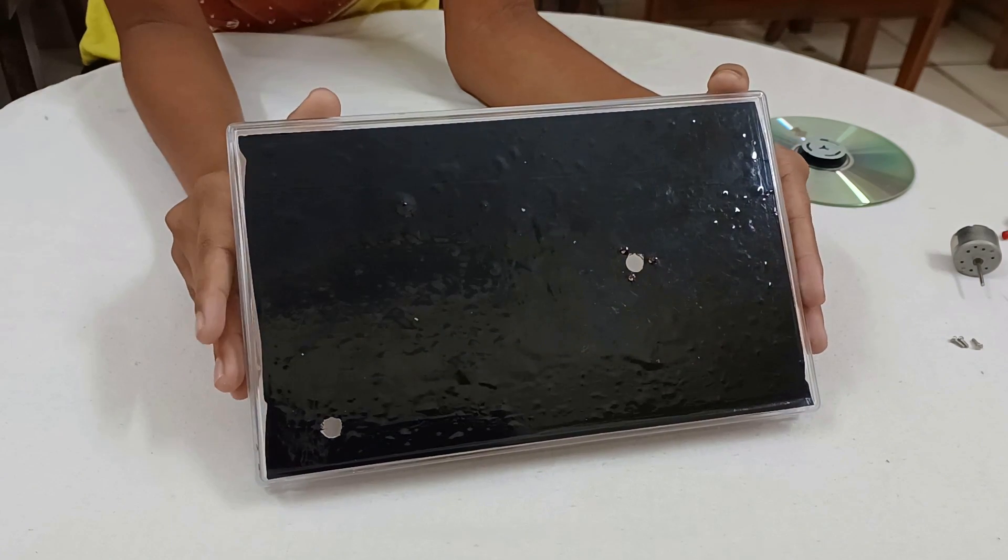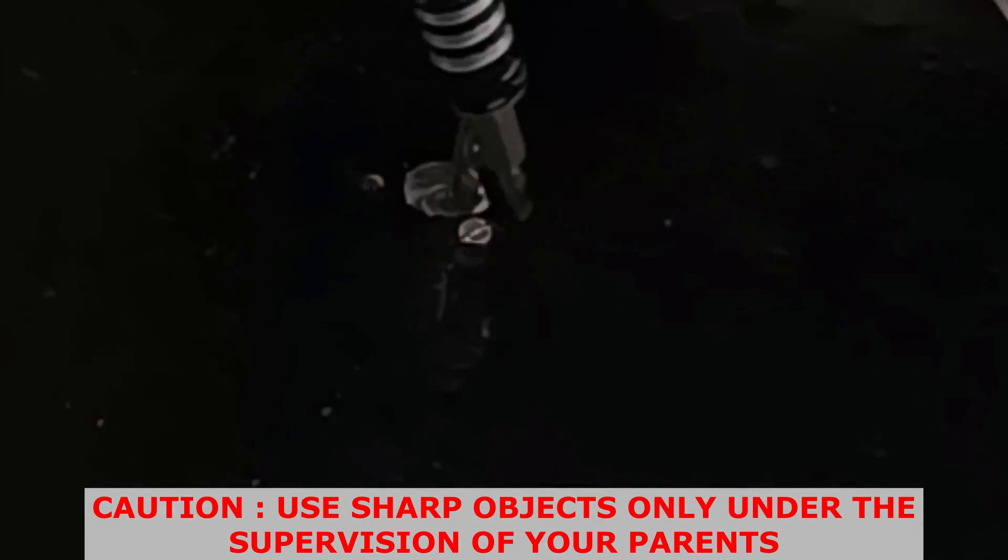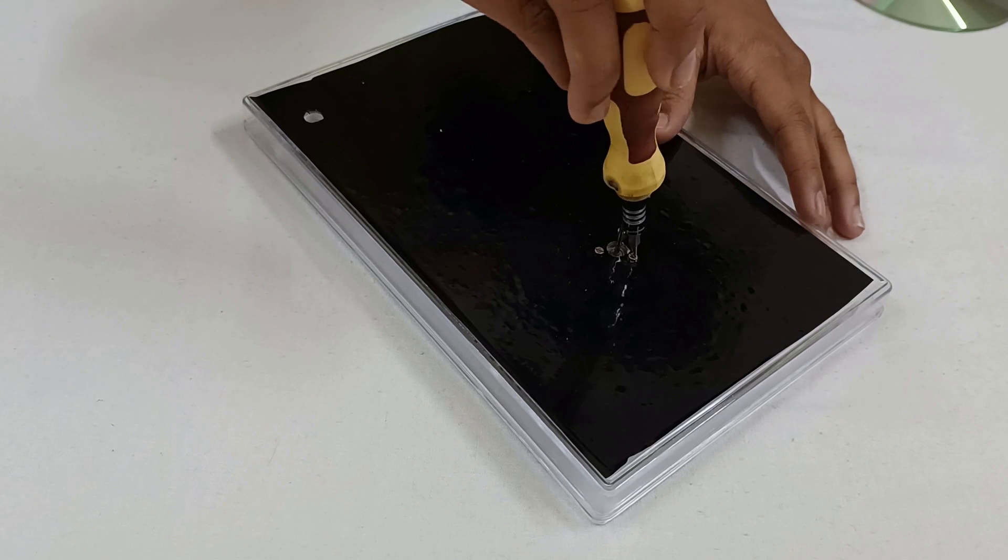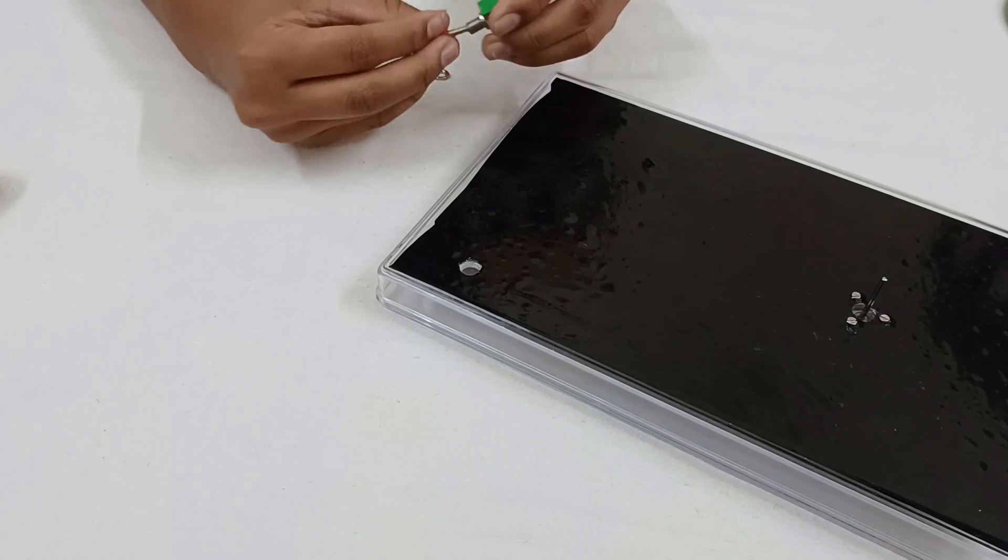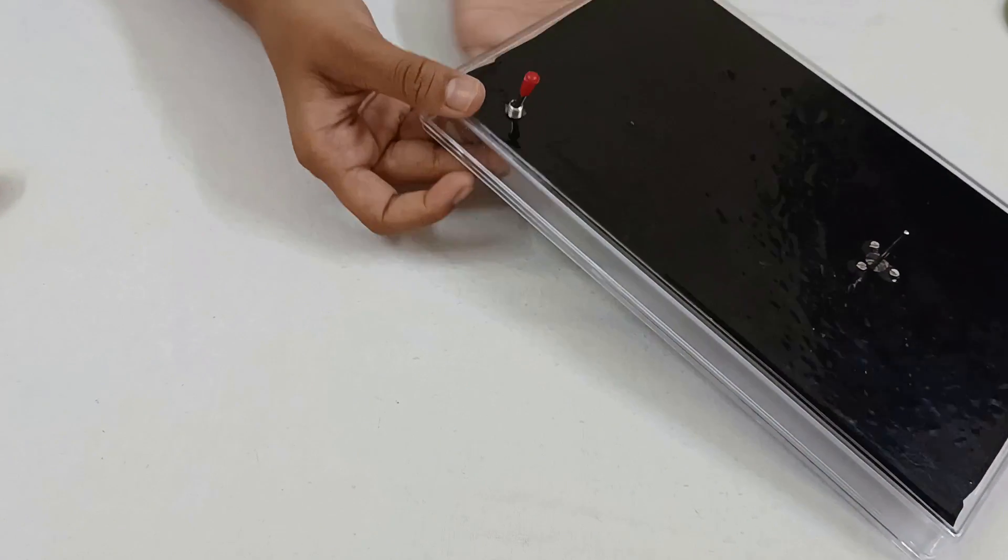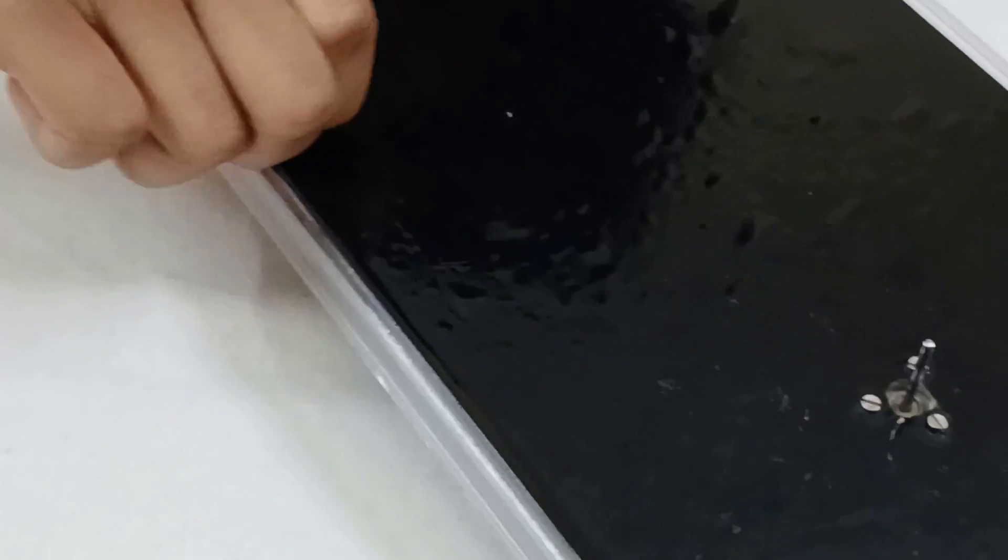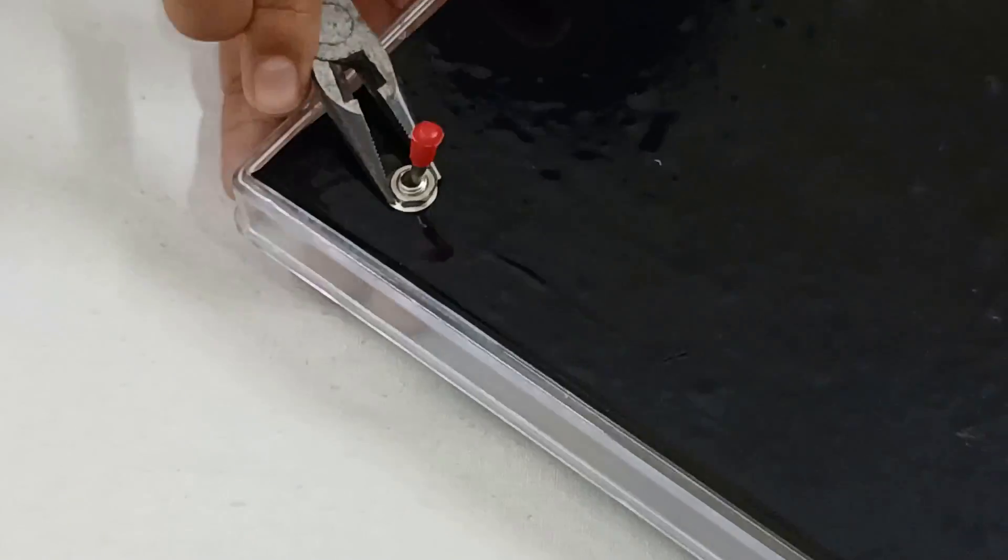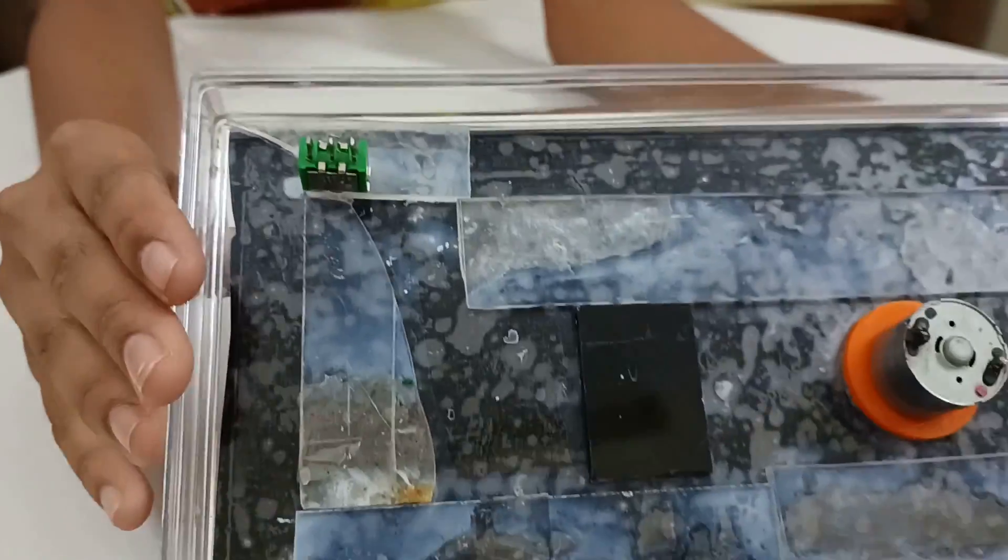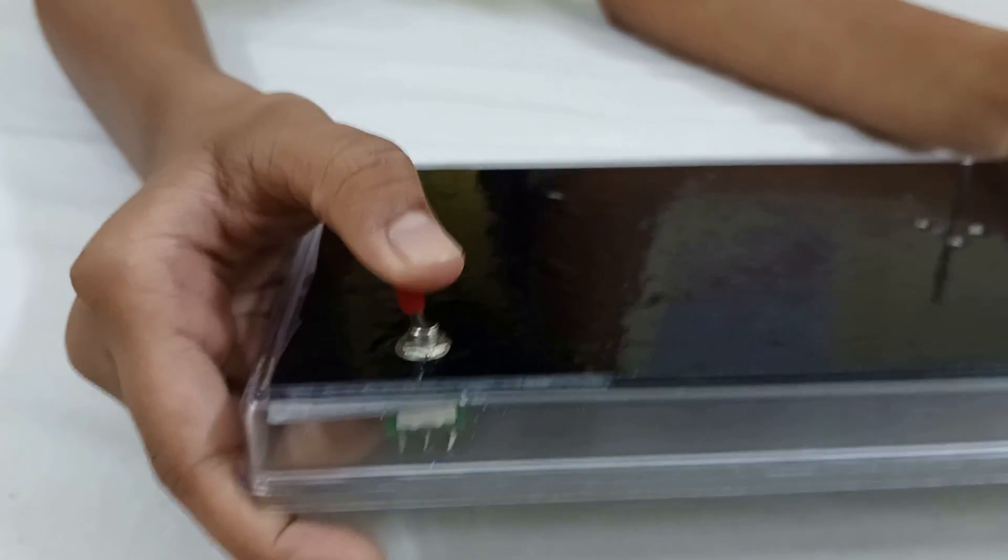Now we can mount the switch and the motor. First of all we will mount the motor. Now put all screws and tie it in. Let's fit the switch. Now switch is okay.